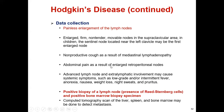Abdominal pain results from enlarged retroperitoneal nodes. Advanced lymph node and extra-lymphatic involvement may cause systemic symptoms such as low-grade or intermittent fever, anorexia, nausea, weight loss, night sweats, and colitis. Positive biopsy of lymph nodes with presence of Reed-Sternberg cells and positive bone marrow biopsy are diagnostic tests. CT scan of the liver, spleen, and bone marrow may be done to detect metastasis.